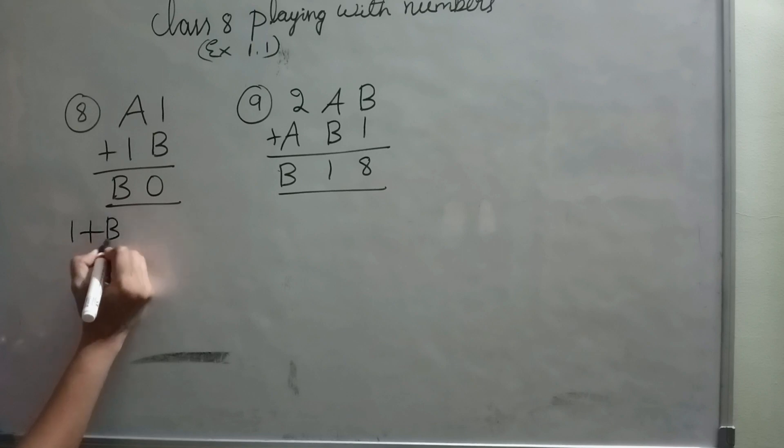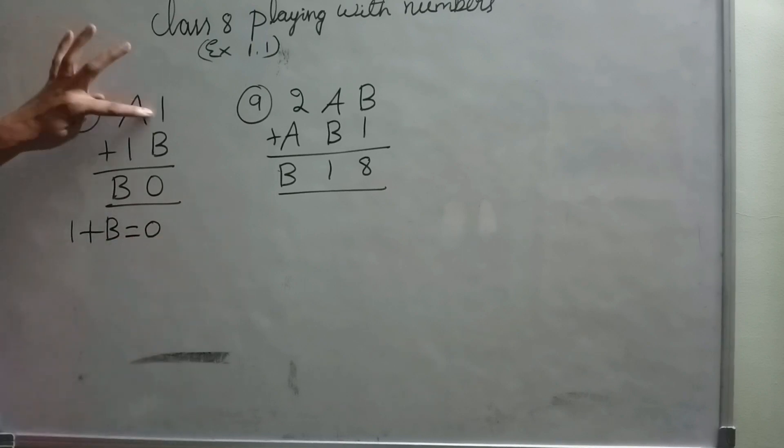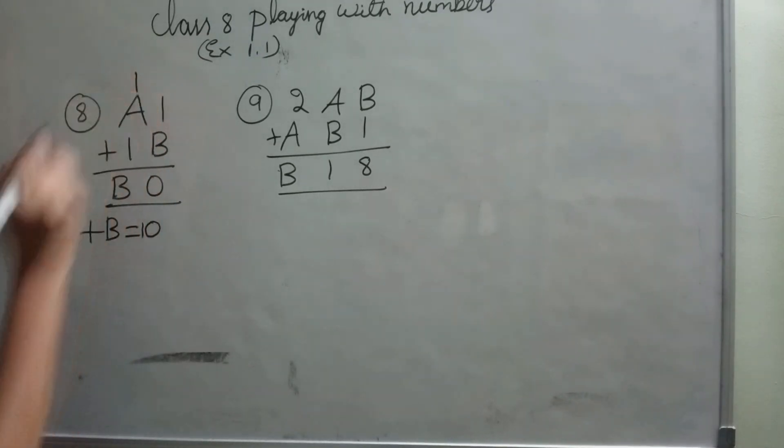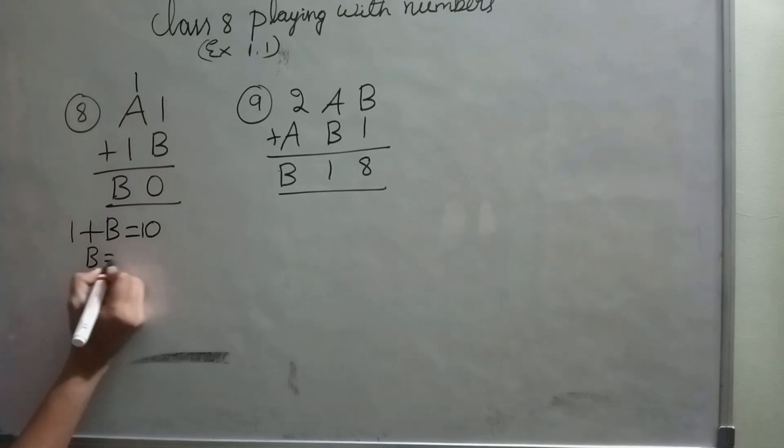1 plus B equals 0. If I add any number to 1, I won't get 0 as an answer. So it may be 10, with 1 carry here. What number should I add to 1 to get 10 as answer? B equals 10 minus 1, that is 9. B equals 9.